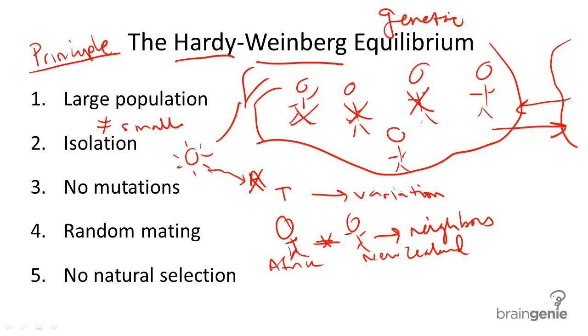Fifth, and lastly, there must be no natural selection. So, if natural selection occurs, such as that one individual is more likely to survive and reproduce than the other, then the traits in a population will change from one generation to the next. So, there must not be natural selection acting upon a population in order for it to remain genetically stable.